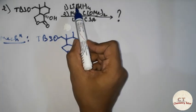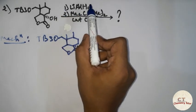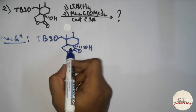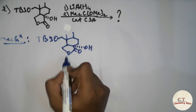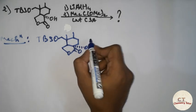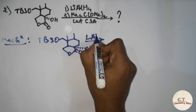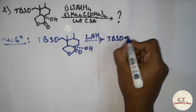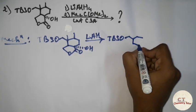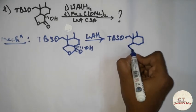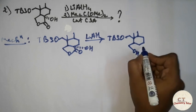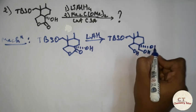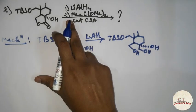Now let's move to the next example. Firstly we treat with lithium aluminum hydride. There is a lactone, so what will lithium aluminum hydride do? It will convert it into alcohols — two alcohols will be formed. With lithium aluminum hydride, the product will have one OH and then another OH.